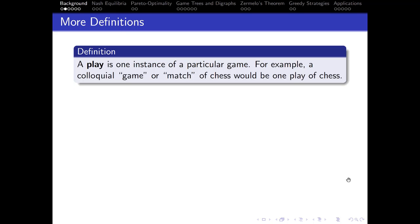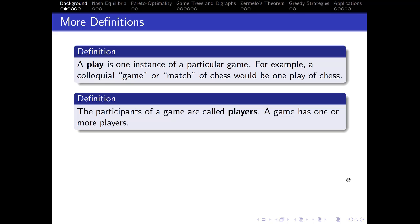A play is one instance of a particular game. For example, what we colloquially call a game or match of chess would be one play of chess, where chess is the actual mathematical game. The participants of a game, or the agents, are called players. All games have one or more players, because if there were no players, there would be no decisions to make and no one to make them, so it would not be a game.